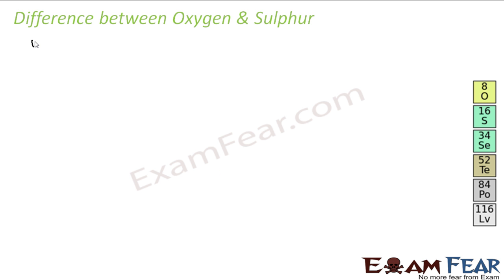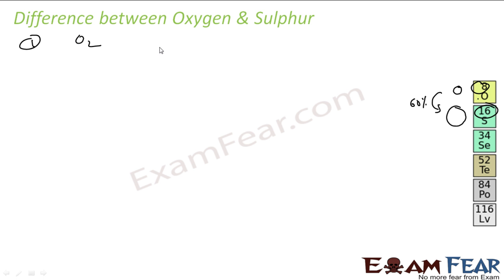Let's see some differences between oxygen and sulfur. The atomic number is different: 8 vs 16. Atomic mass is also different: 16 vs 32. Atomic size is also different — sulfur is almost 60% bigger than oxygen. Density and molecularity are also different. In all these cases, oxygen has a smaller value than sulfur. Also, oxygen is diatomic (O₂), while sulfur is octatomic (S₈).